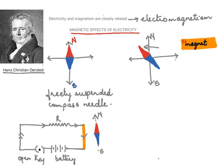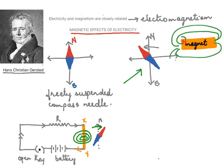As current begins to flow through conductor XY, the needle behaves very differently — it deflects from the north-south direction. When current flows through XY, a magnetic field is produced around XY, and this magnetic field causes the deflection of the compass needle. So we can conclude that when current flows through XY, a magnetic field is produced which brings about the deflection of the compass needle.